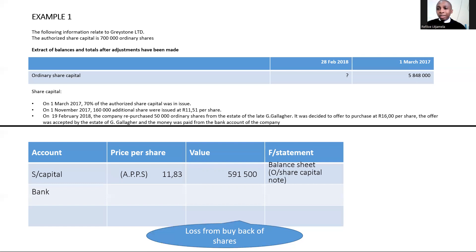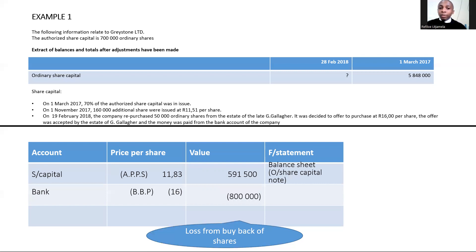Another account affected is bank. Bank will be negatively affected — it will go down by the buyback price at market value of R16 per share on 19 February. Put it in brackets because it results in a cash outflow. Total money leaving the bank is 50,000 × R16 = R800,000. This R800,000 is deducted from bank or recorded as a cash outflow in the statement of cash flows.